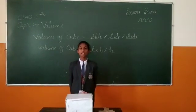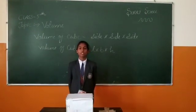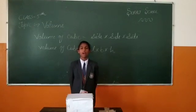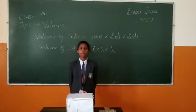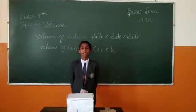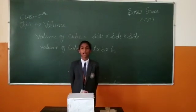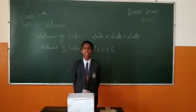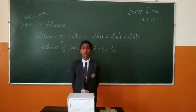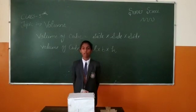The capacity is called volume. A unit of volume is a cube. A solid shape that has length, breadth and height is a cuboid. A cuboid in which length, breadth and height are equal is a cube. Now let's find the formula of volume.